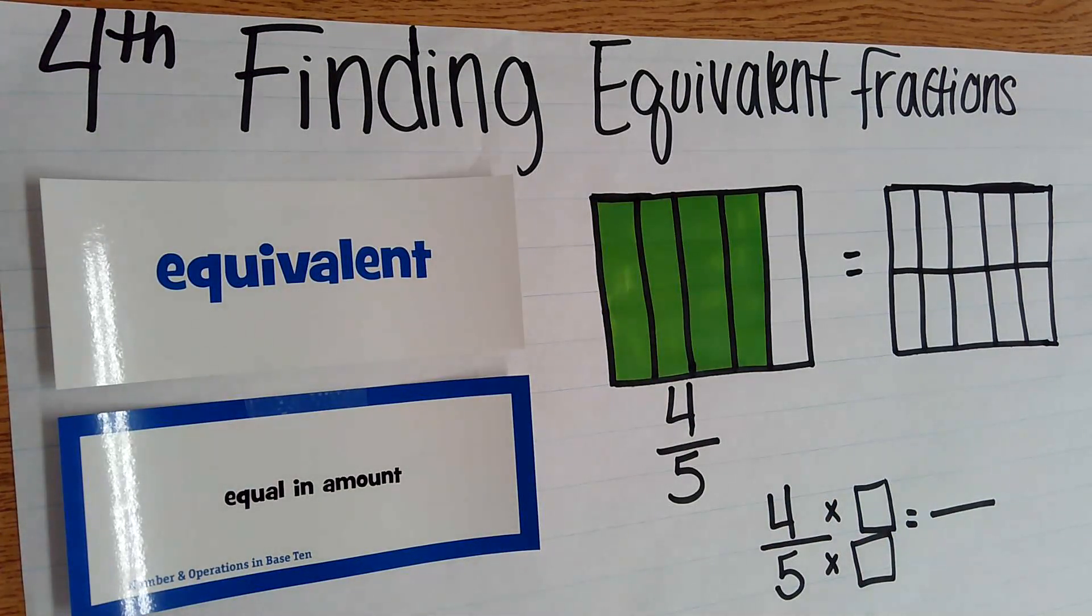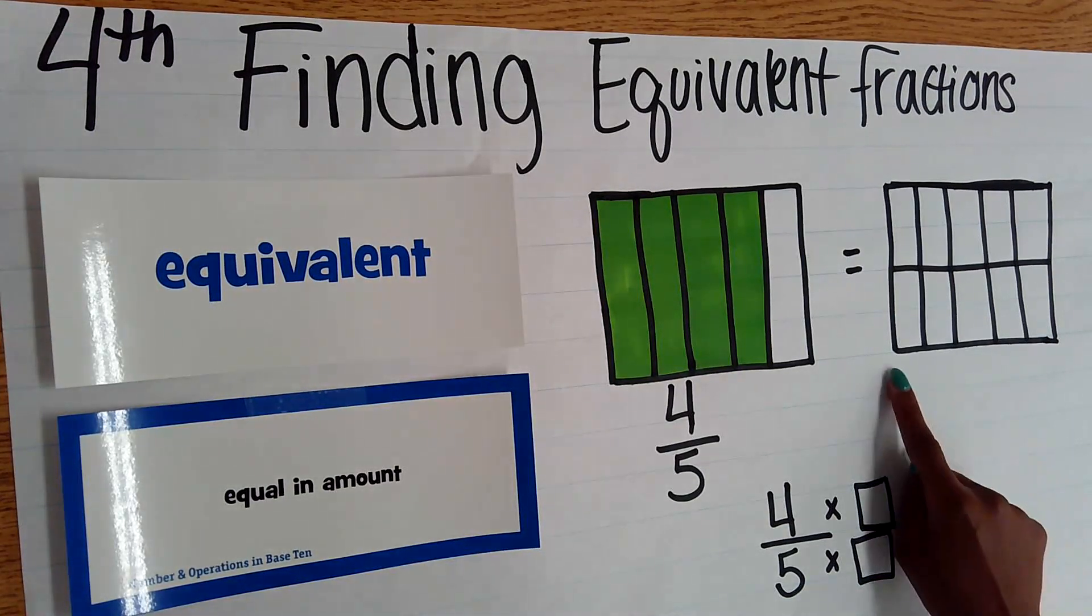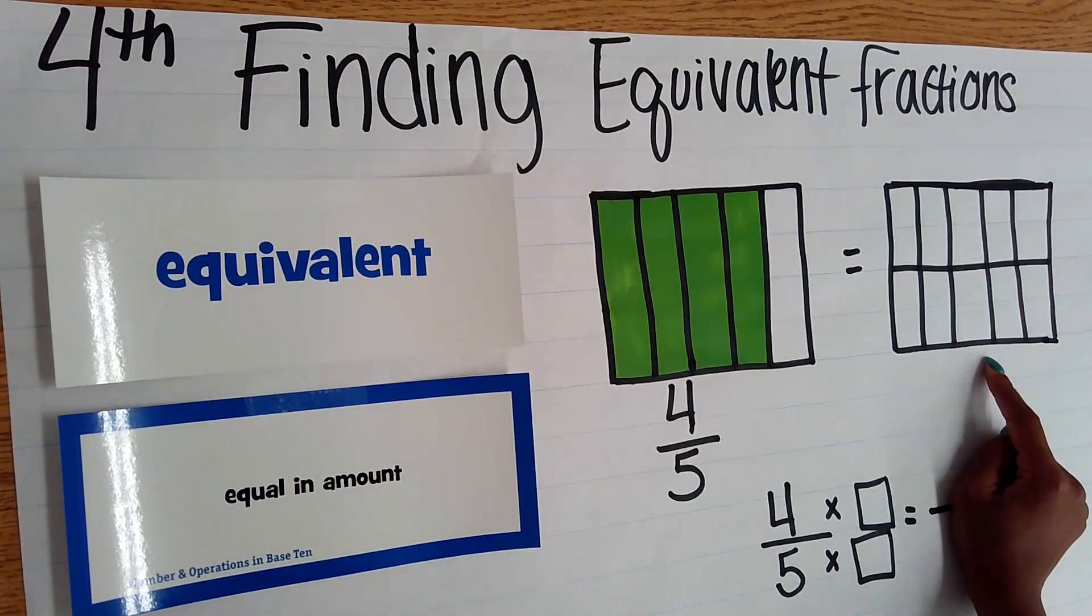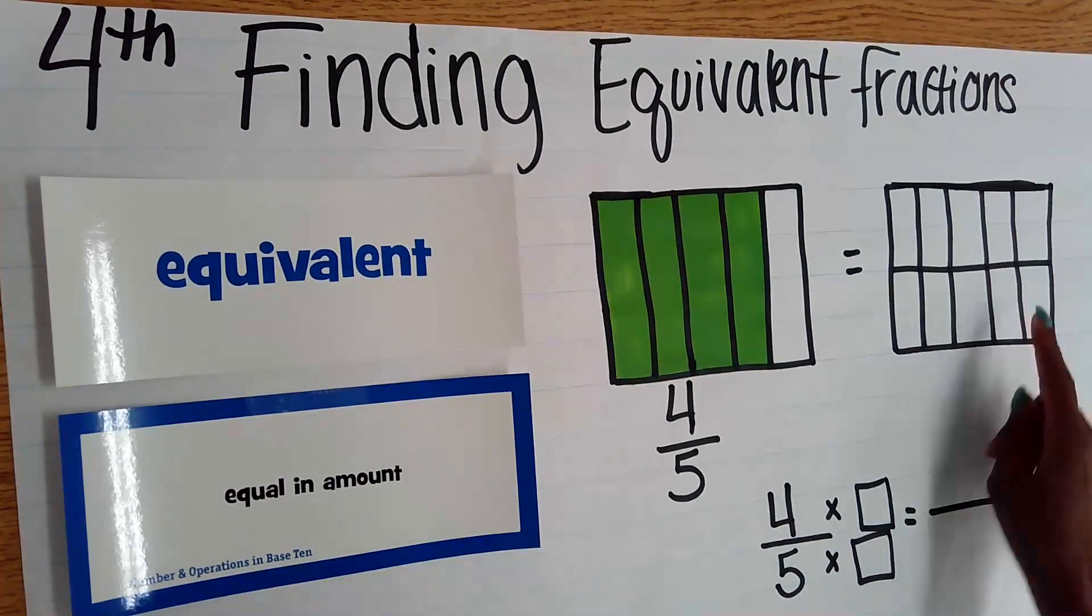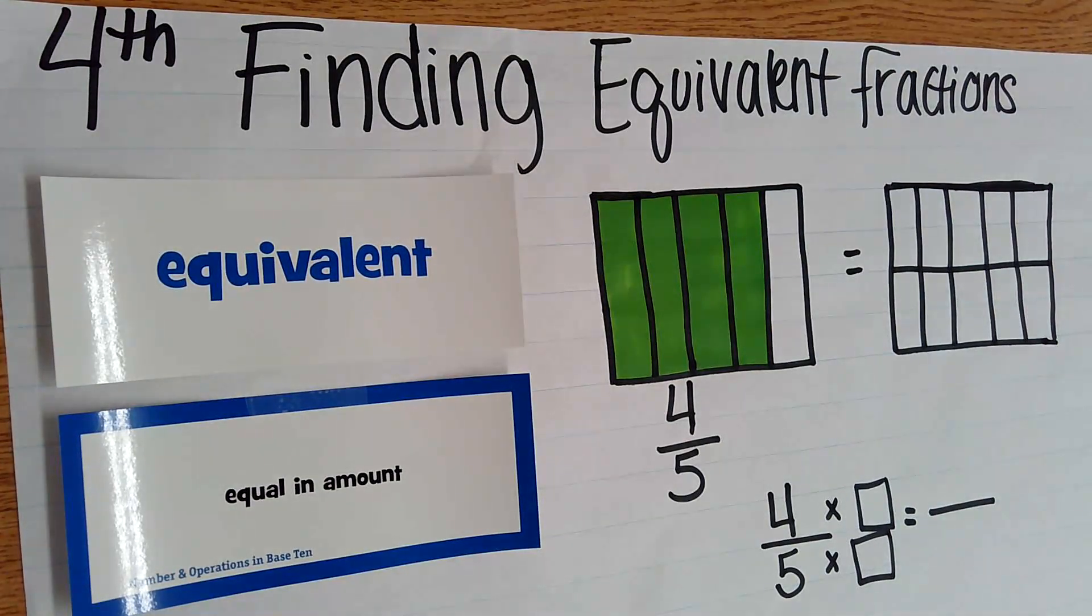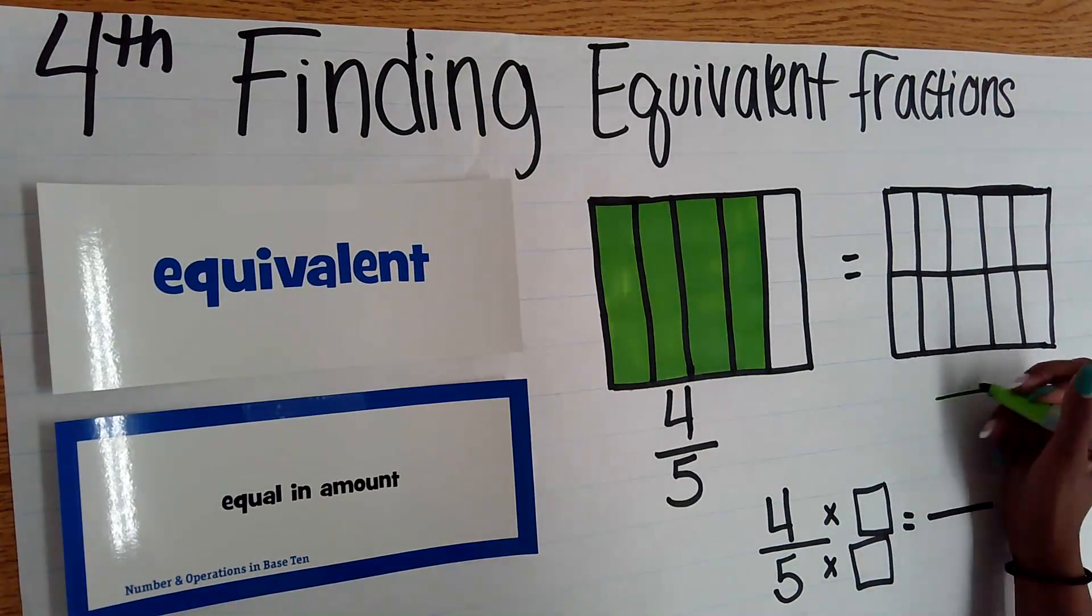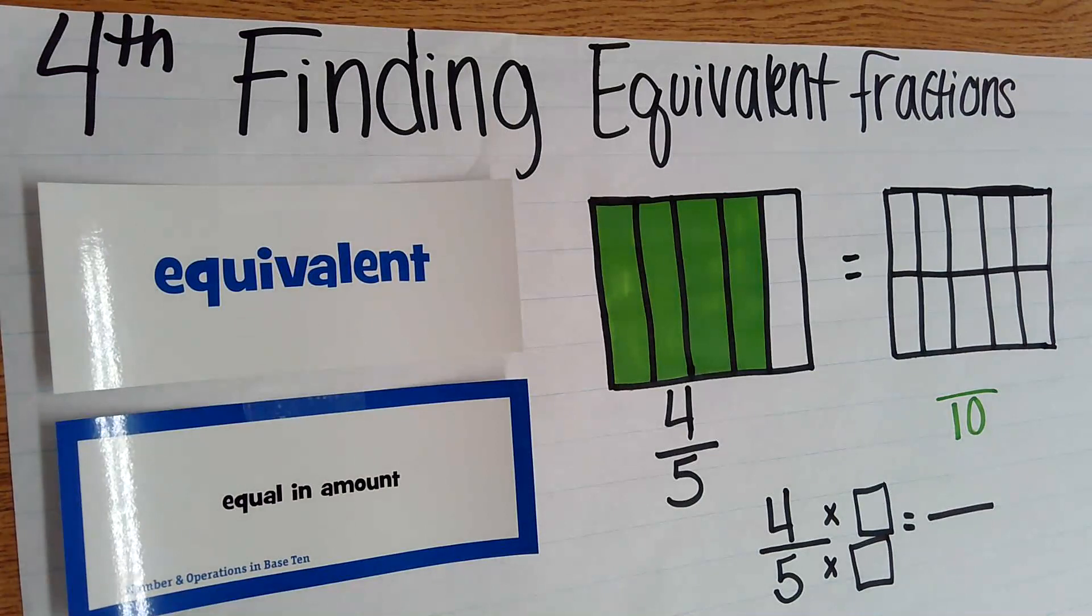So if I want to take this and make an equivalent fraction, I want it to take up the same amount of space. If you notice, on my other hole, it is not broken into fifths. I have two, four, six, eight. I have ten equal parts in this hole. That's going to give me a denominator of ten.